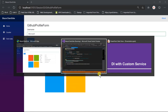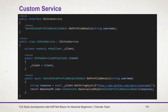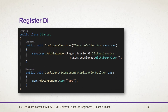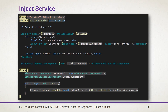Let's review what we learned in this session. The custom service we created includes a class and an interface. In the class, we use the constructor to inject services. After creating a service, we register it for dependency injection using AddSingleton, AddTransient, or AddScoped, passing the interface and class name of the service. Like built-in services, custom services are also injected using the inject directive and you can call their methods similarly.